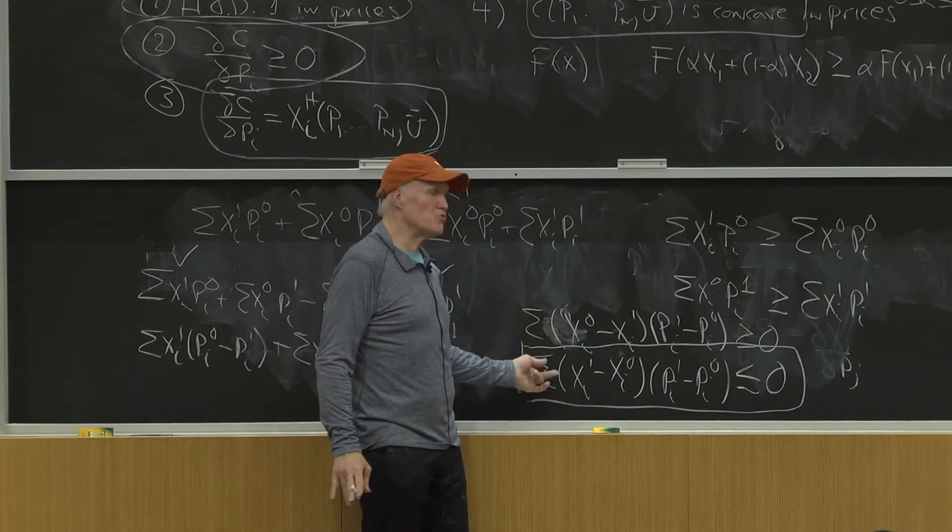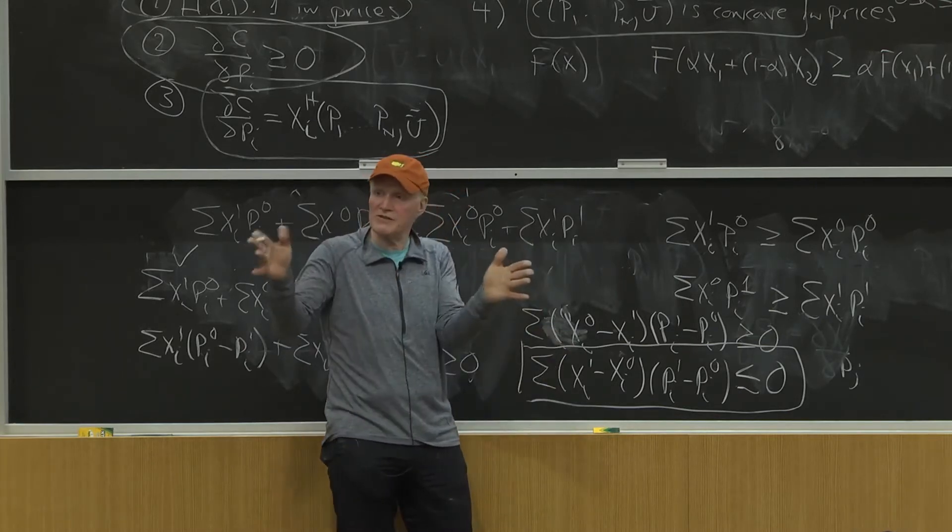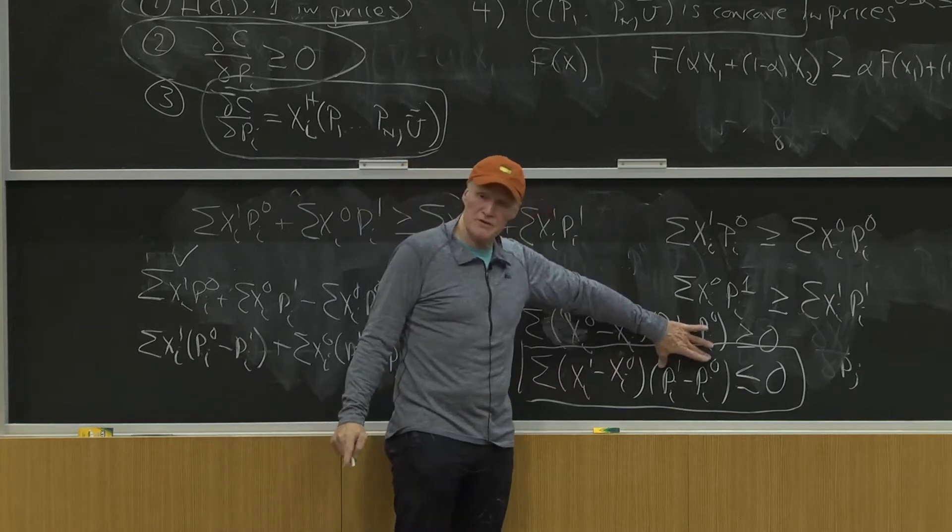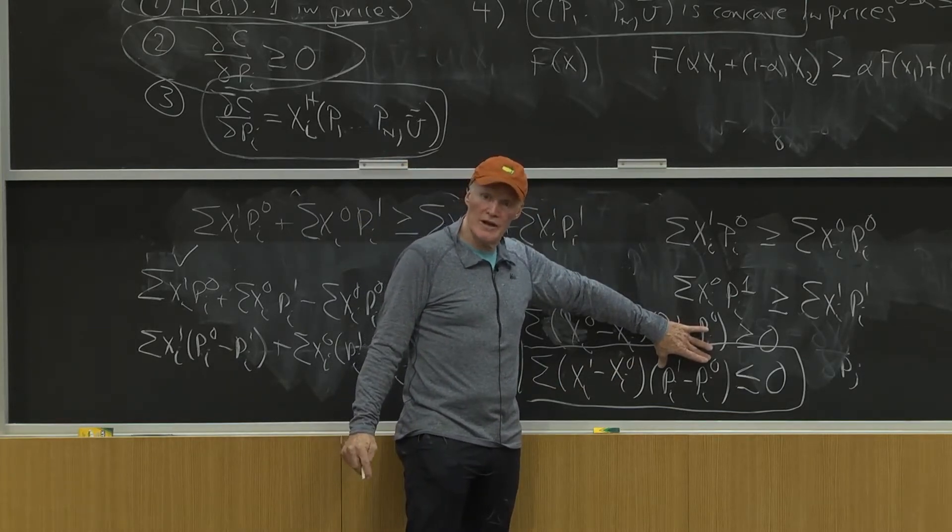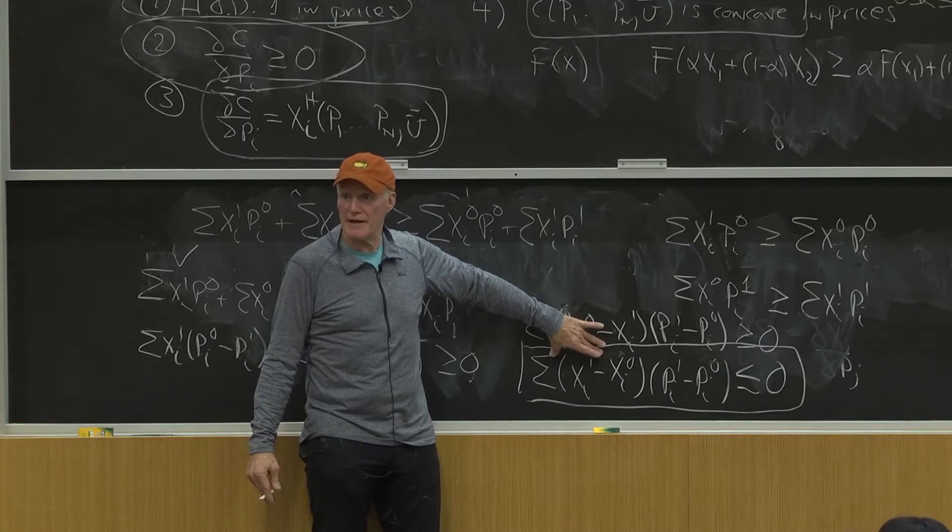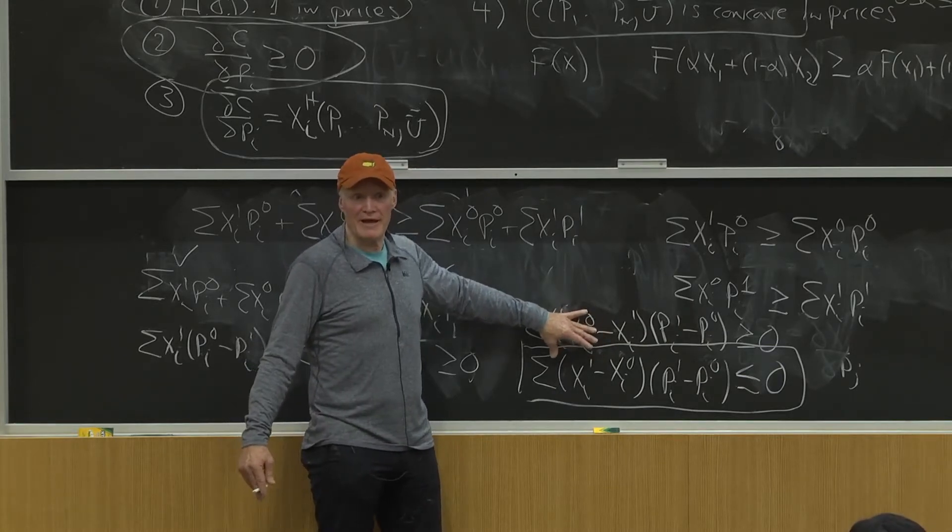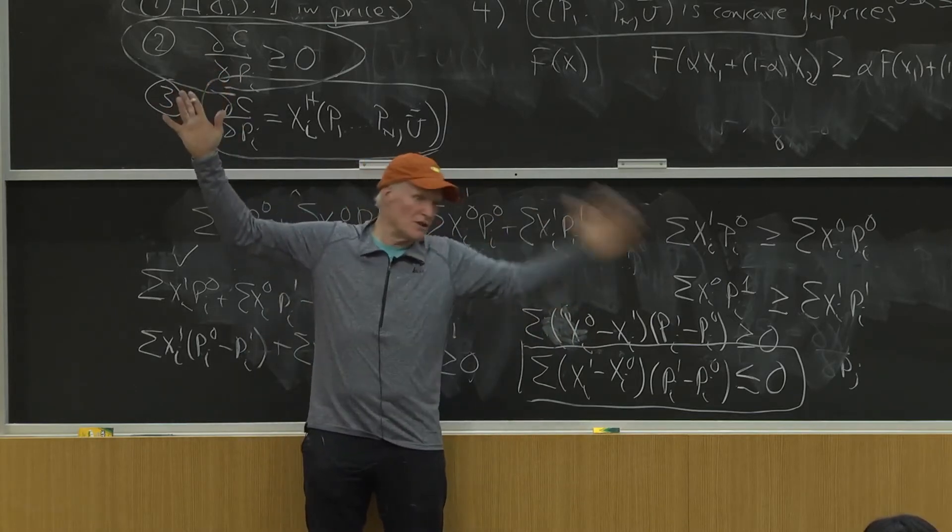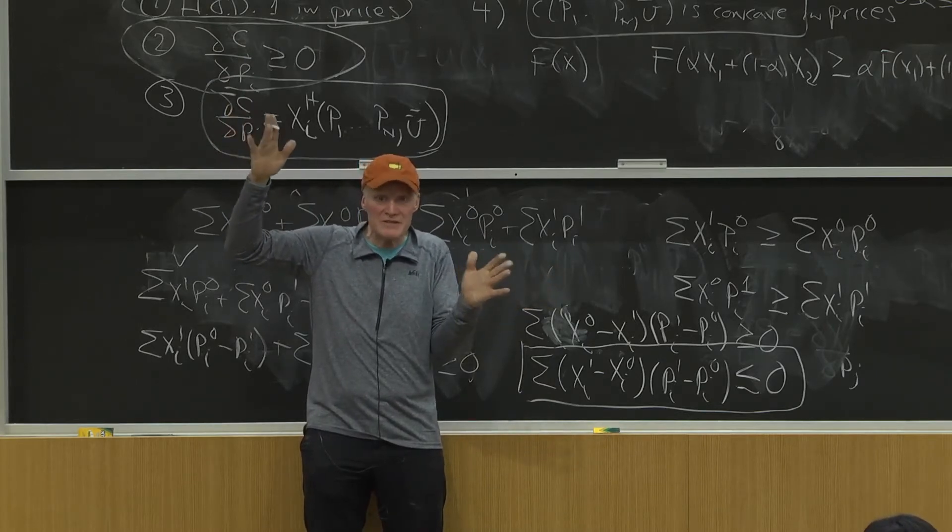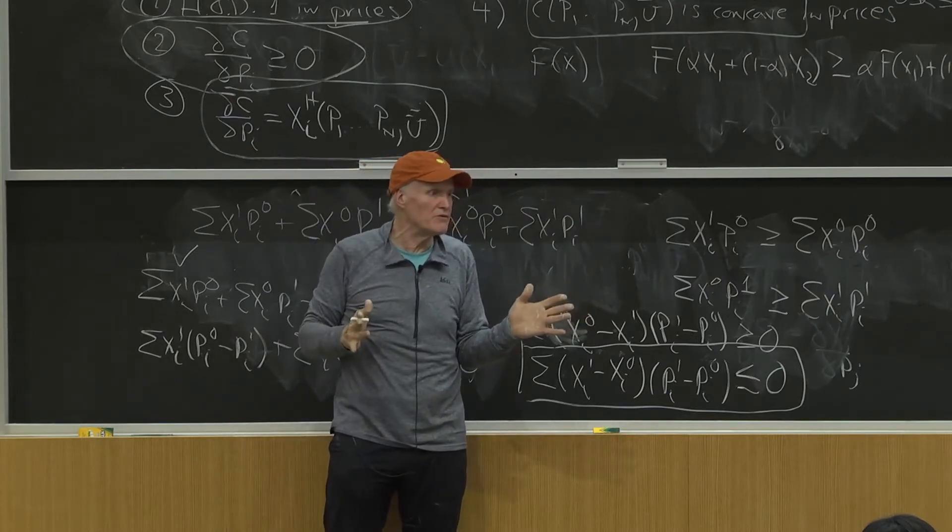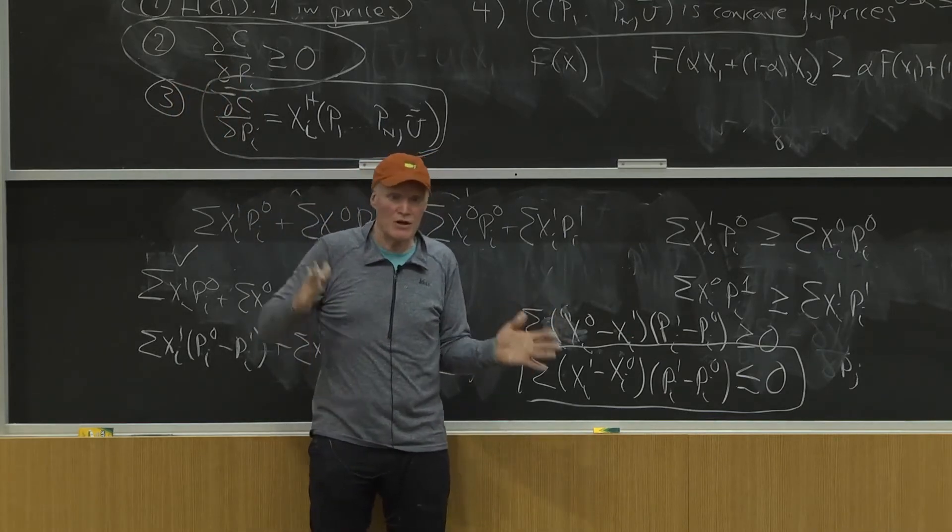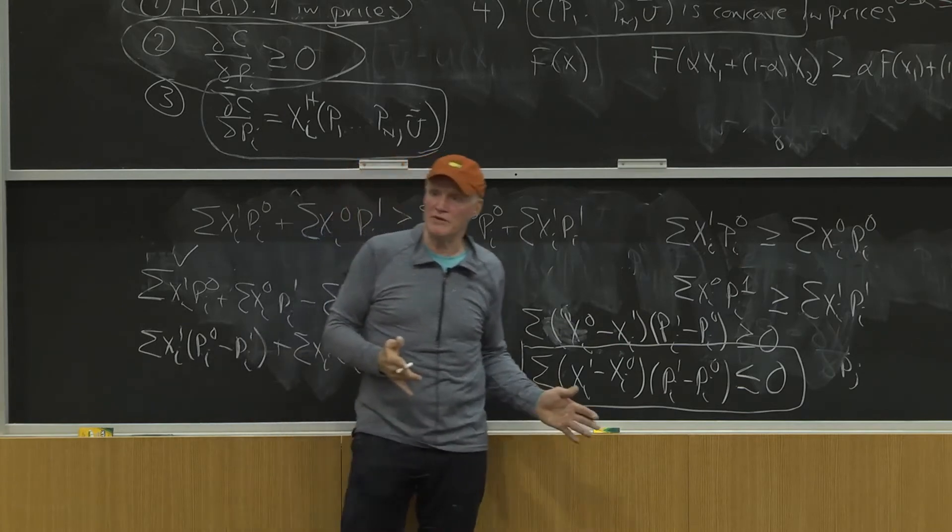Think about the case where I only change one of the prices, keeping all prices constant other than one. Then this sum's going to go away because these terms are going to be zero for all but one of them. And for that one good, whatever way I move the price, the quantity has to go the opposite way. That is the law of demand. But the law of demand is more general than that. If I move the whole price vector, raise this price, lower that price, whatever I end up doing, the guy has to adjust such that at least on average the quantities are moving the opposite way of the prices.